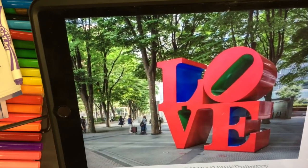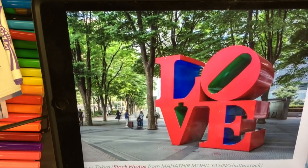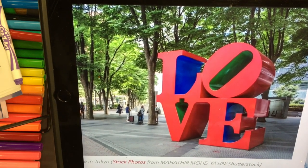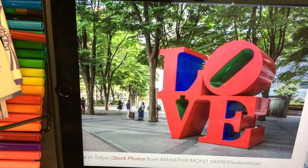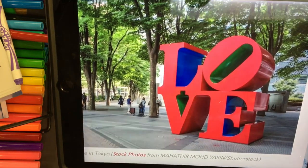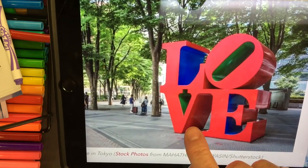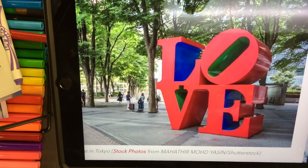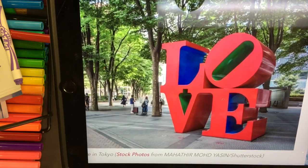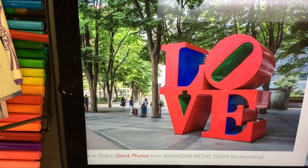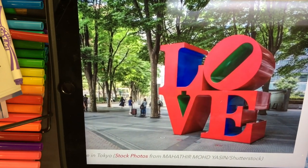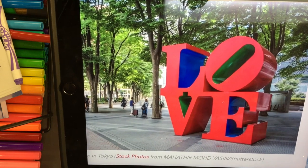This is a sculpture he did — one of many. This one comes from Tokyo, in a little park area, and it's larger than life size. You can even walk through the middle. He did many of them; there's one in Indiana as well, and several throughout the country and world. This artist is world famous for this pop art image, this iconic love symbol.